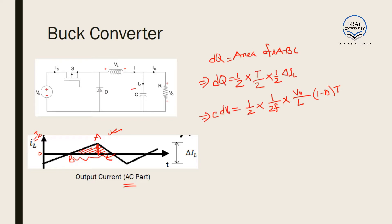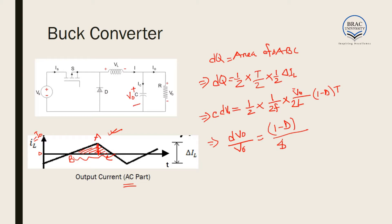Since the voltage across the capacitor is V_0, we use dV_0. From the calculation, we find dV_0/V_0 = (1−D) / (8·L·C·F²). This is our expression for ripple voltage in the buck converter.